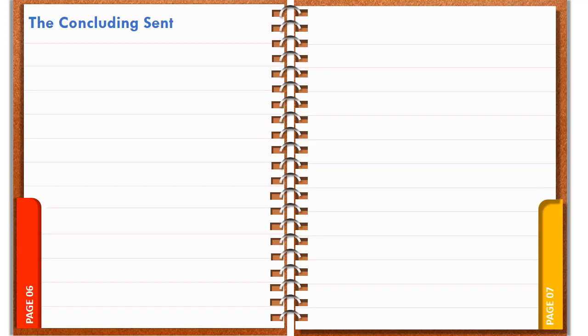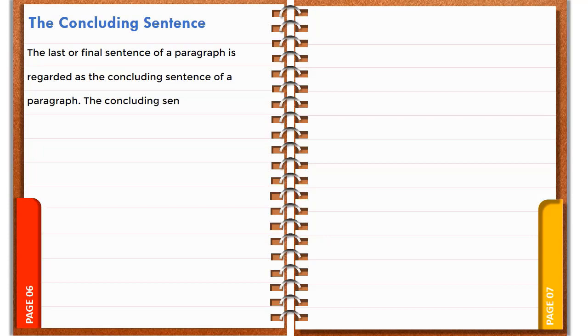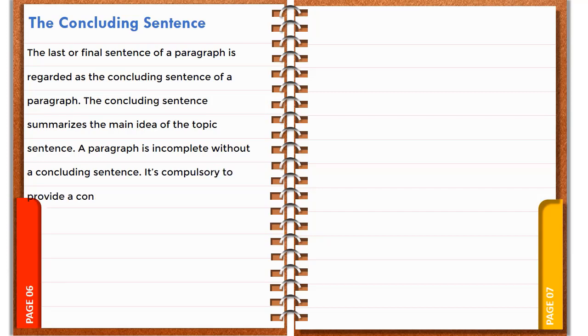The last or final sentence of a paragraph is regarded as the concluding sentence. The concluding sentence summarizes the main idea of the topic sentence. A paragraph is incomplete without a concluding sentence. It's compulsory to provide a conclusive remark in a paragraph.